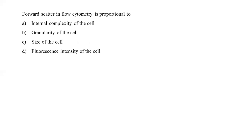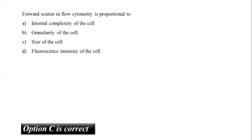The next question: forward scatter in flow cytometry is proportional to what? Forward and side scatter light and fluorescence from stained cells are channeled by filters and mirrors in the flow cytometer. Forward scatter signal intensity is proportional to cell size — the bigger the cell, the more light is scattered and the higher the signal detected. The correct answer is option C, size of the cell.